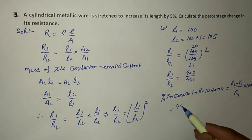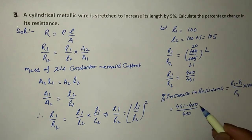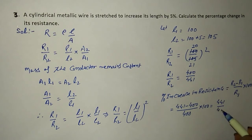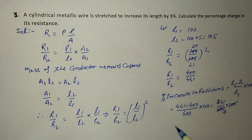(441 - 400)/400 × 100 = 41/400 × 100 = 41/4 = 10.25%. Answer: 10.25%.